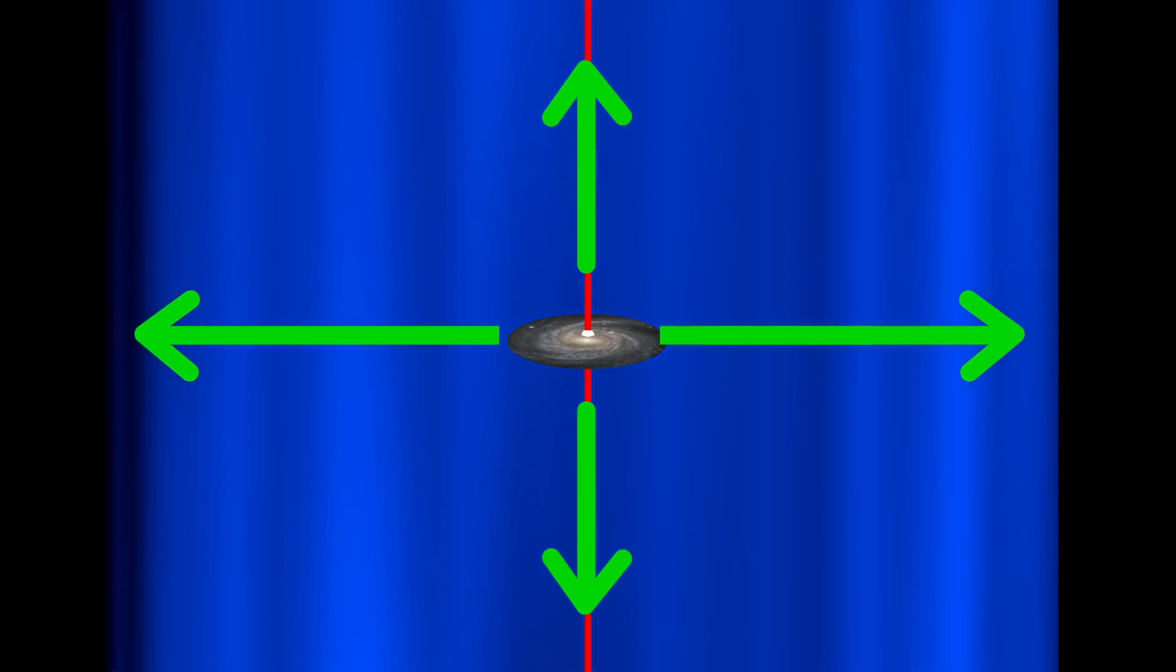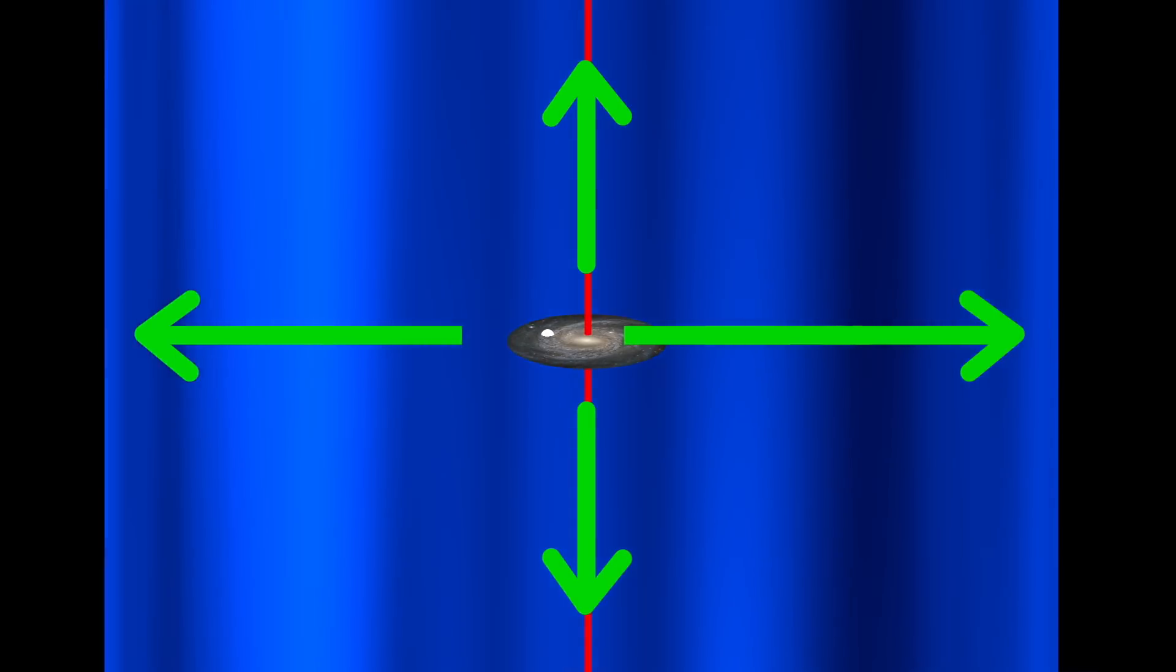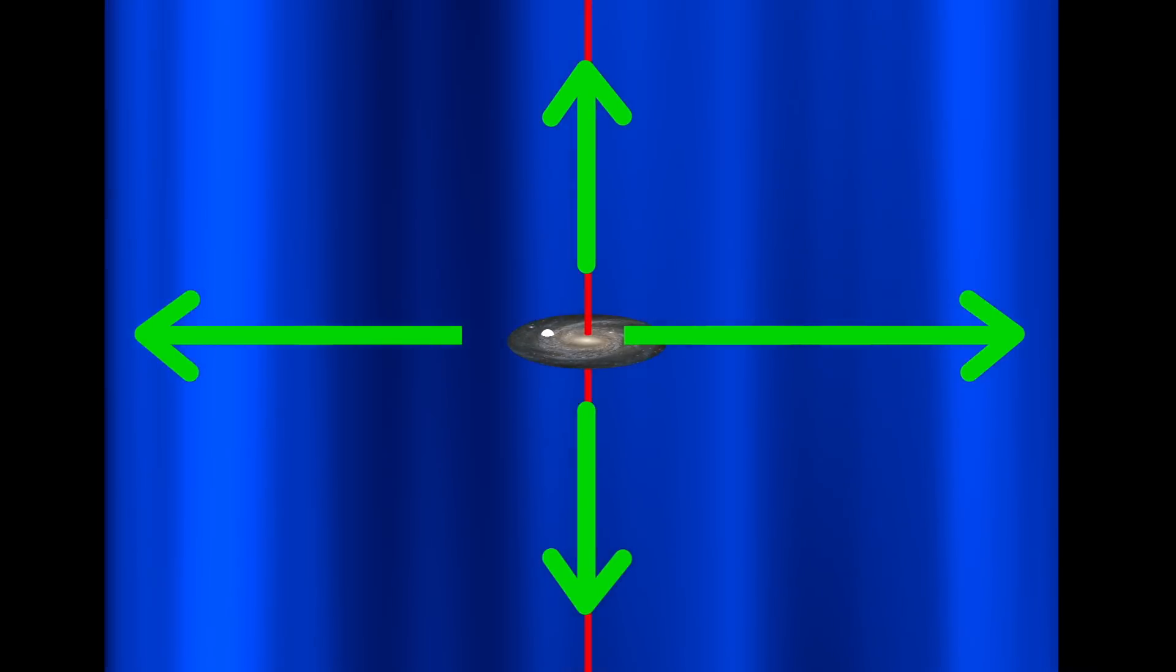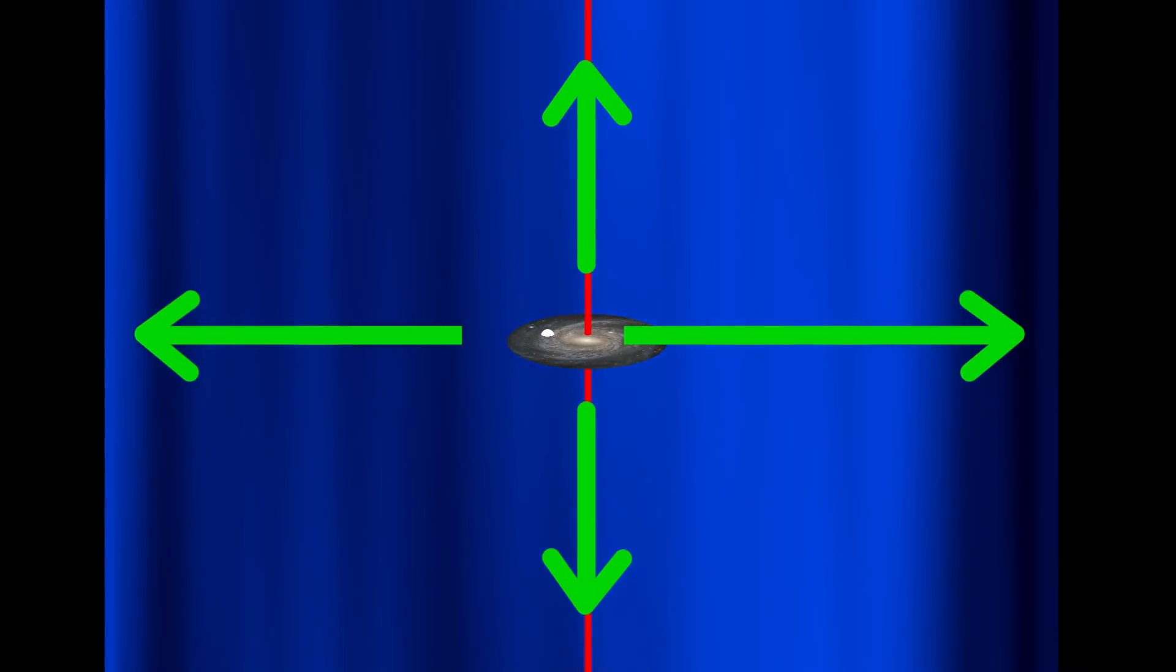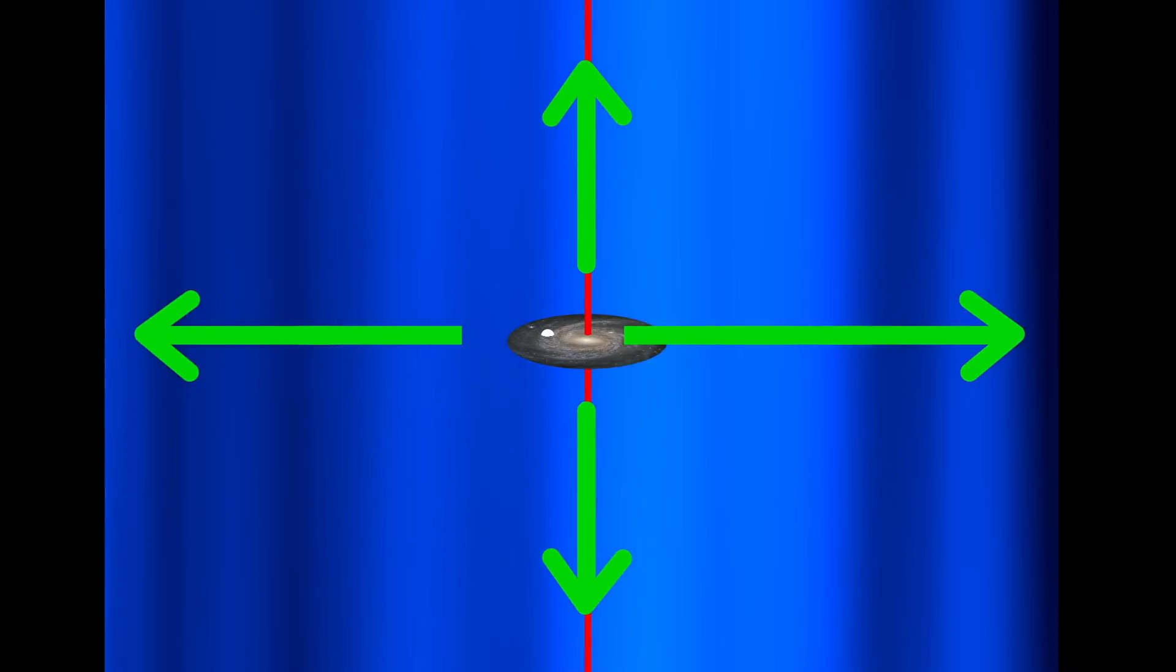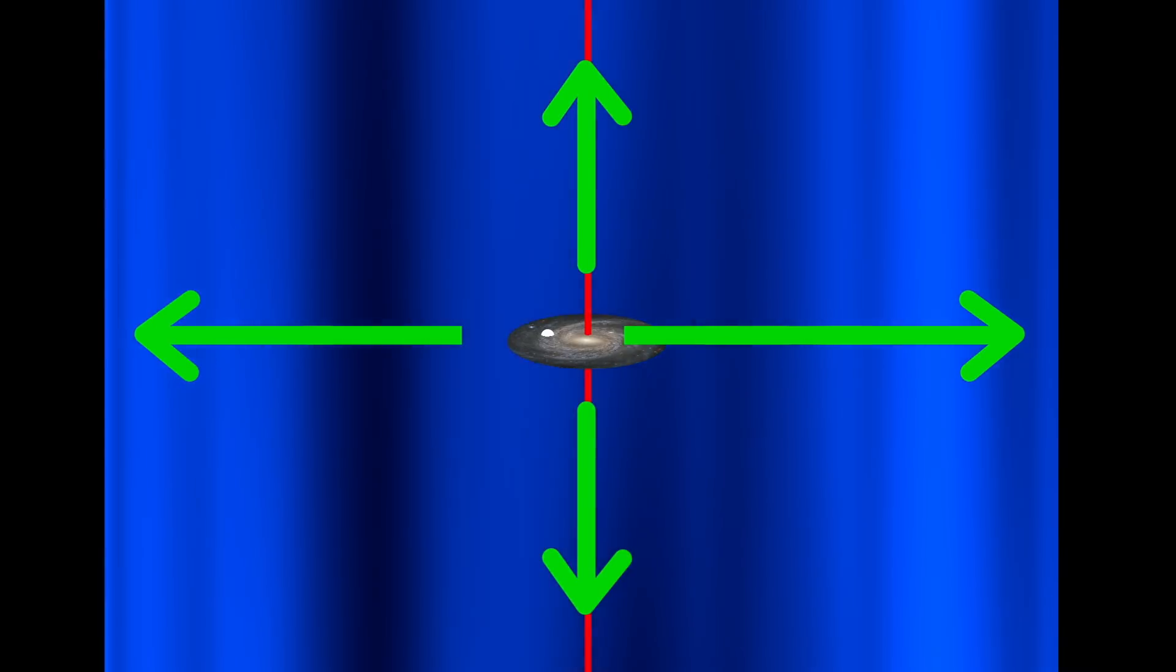As we move further out from the center the central concentration of mass falls off quickly and we are off axis from the filament meaning we would experience an increased pull from the filament on the opposite side of the central bulge.